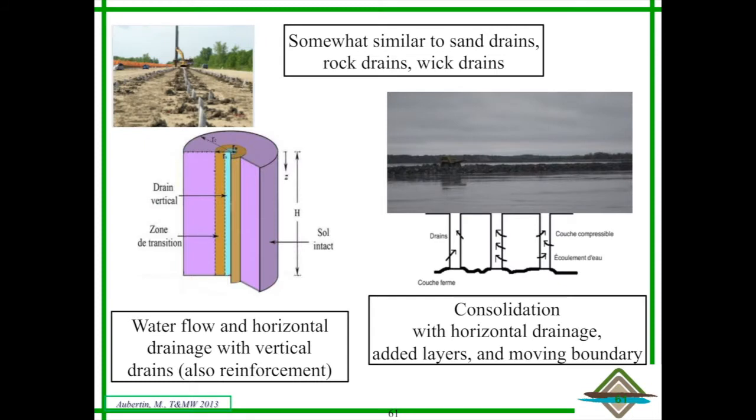The first one relates to the fact that these inclusions can be seen as somewhat similar to sand drains, vertical drains, rock drains, or even wick drains. What they do is they give you a pathway to dissipate the excess pore water pressure during filling of your impoundment by moving water sideways and then upward. So you dissipate very quickly your pore water pressure during the filling of the impoundment.